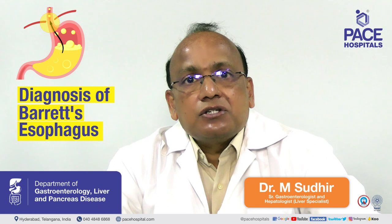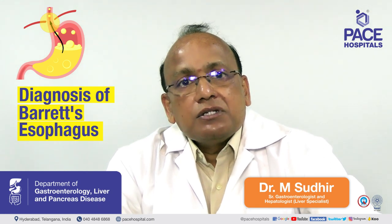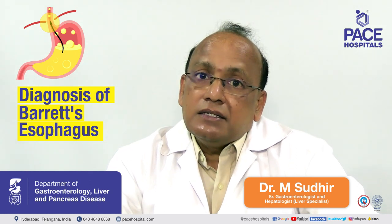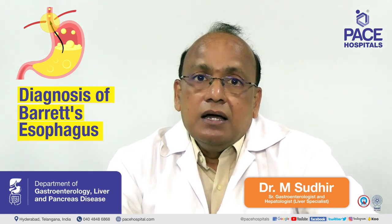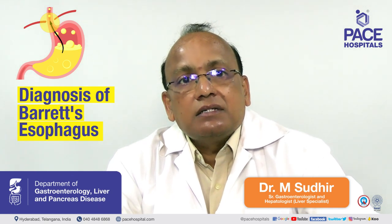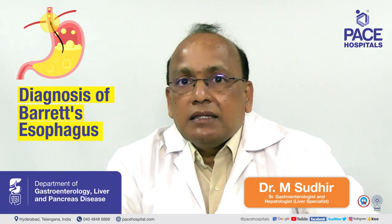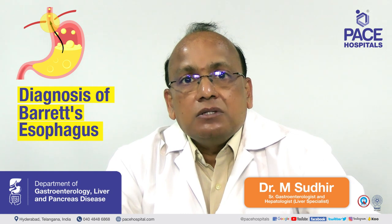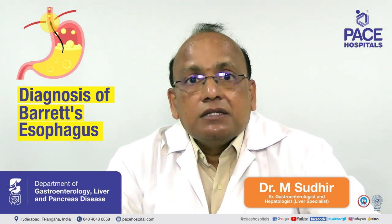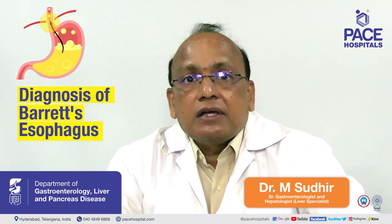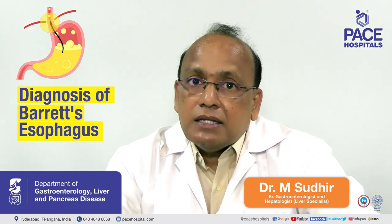There are different stages of Barrett's esophagus. First, Barrett's esophagus without any dysplasia. Second, low-grade dysplasia. Third, high-grade dysplasia. Fourth, ICM — intramucosal malignancy. And the last is overt adenocarcinoma. These are the five stages. Depending on the biopsy findings, the treatment will vary. Screening is very important, especially when the patient has low-grade dysplasia. The higher the dysplasia, the more cancerous it is.